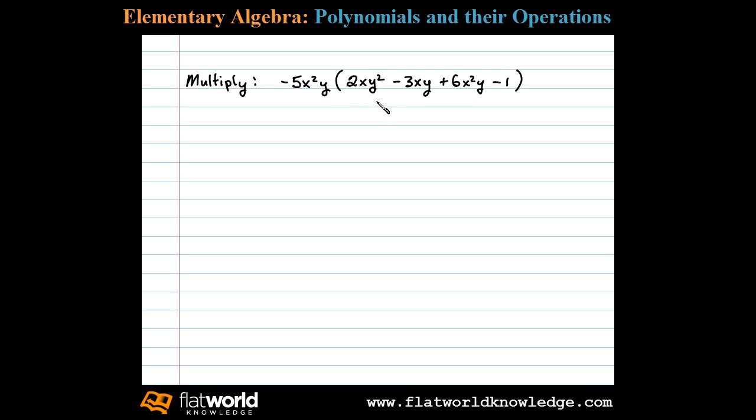Multiplying polynomials involves the distributive property and the product rule for exponents. We multiply the coefficients and add the exponents of the variables with the same base. In this case, we have negative 5x squared y times 2xy squared. Negative 5 times 2 is negative 10, x squared times x is x to the third, and y times y squared is y to the third.